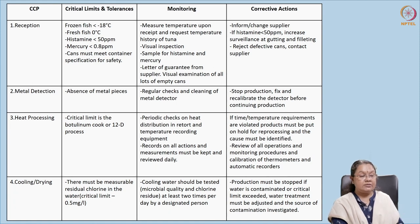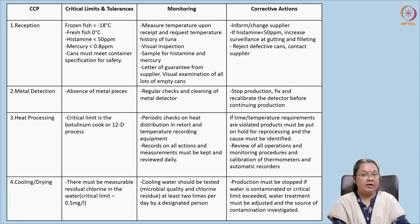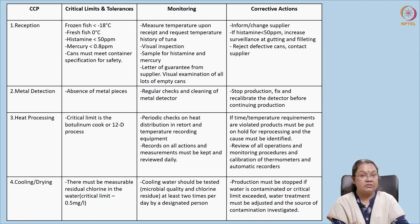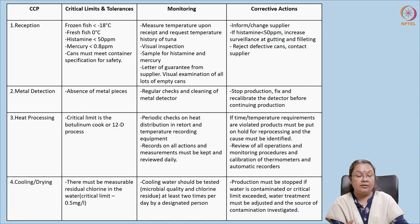For canned tuna there are four CCPs: reception, metal detection, heat processing, and cooling and drying. Tuna being a scombrid fish may have high amounts of histamine which can lead to scombrid poisoning. Raw material should have histamine below 50 ppm and should not contain heavy metals — mercury should be below 0.8 ppm. Histamine levels are controlled by preventing microbial growth, generally by reducing temperature. Frozen fish should be below -18°C and fresh fish should be at 0°C.